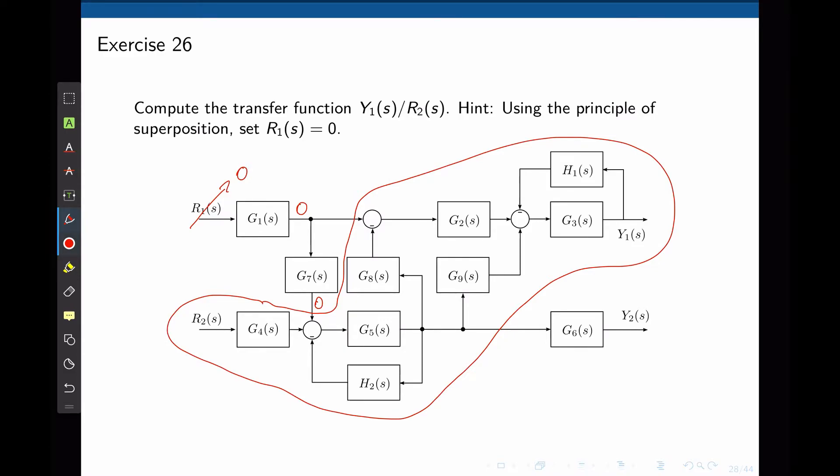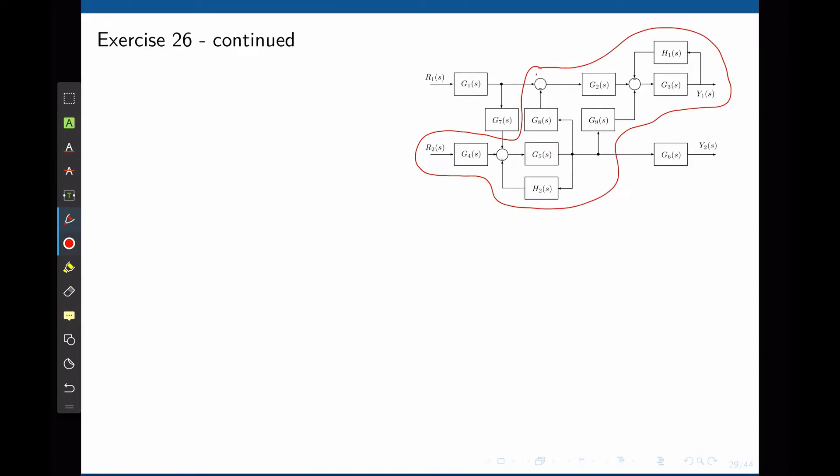Our job now is to find that transfer function. By highlighting again the part of the diagram that we are interested in, we can now start to simplify this block diagram starting at R2.